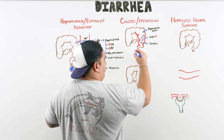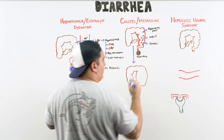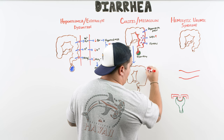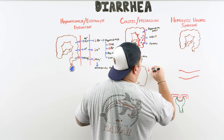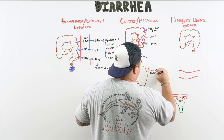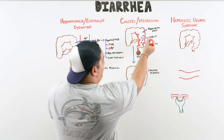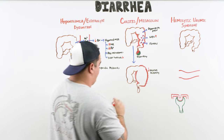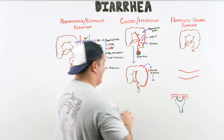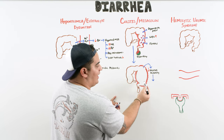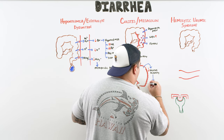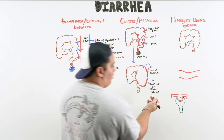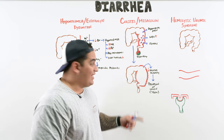In the worst-case scenario, if colitis continues, the chronic inflammation shuts down the contractile activity of the colon — the muscles and myenteric plexus stop working. This causes the colon to dilate, like a localized ileus. When that dilation reaches greater than six centimeters, we call it toxic megacolon.